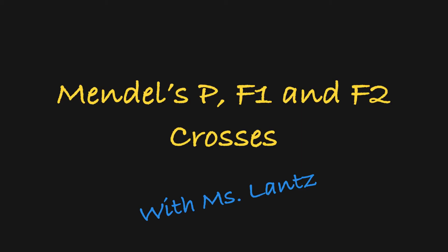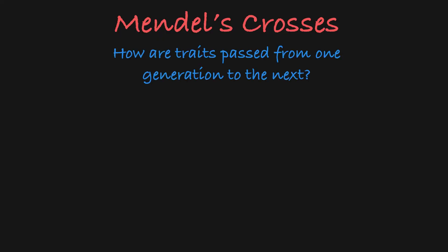In this video, we'll walk through the P, F1, and F2 crosses that taught Gregor Mendel the basics of trait inheritance. In the 1800s, Gregor Mendel worked with pea plants to determine how traits are passed from one generation to another. One trait he focused on was pea color.